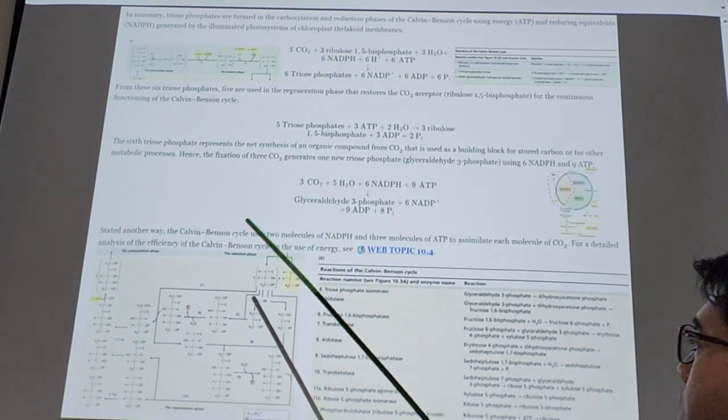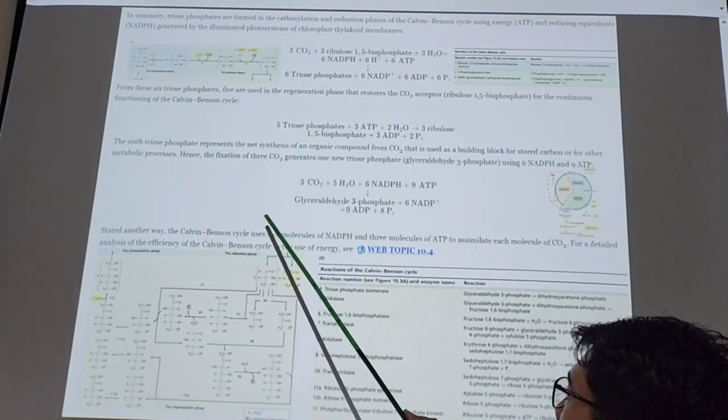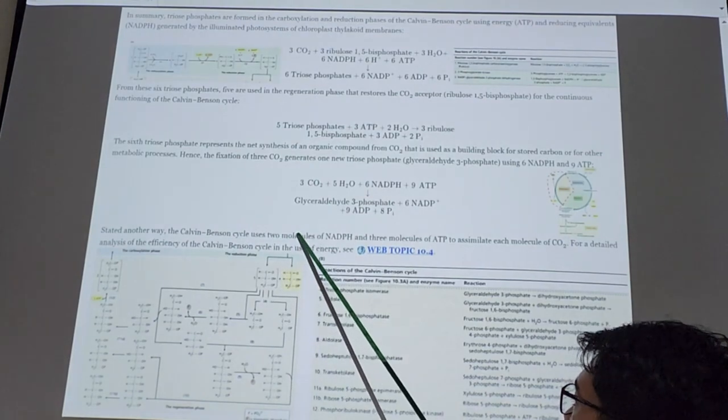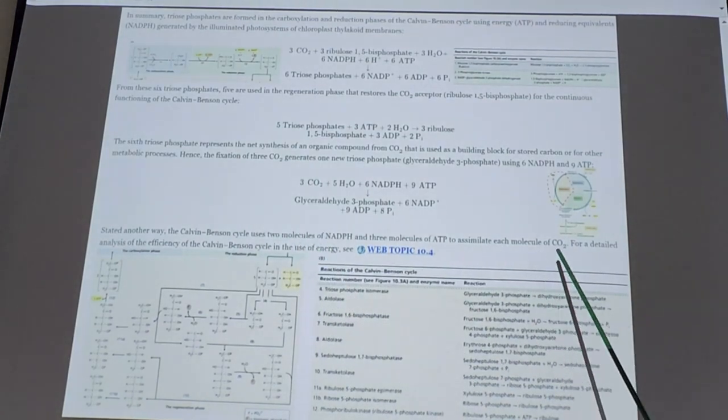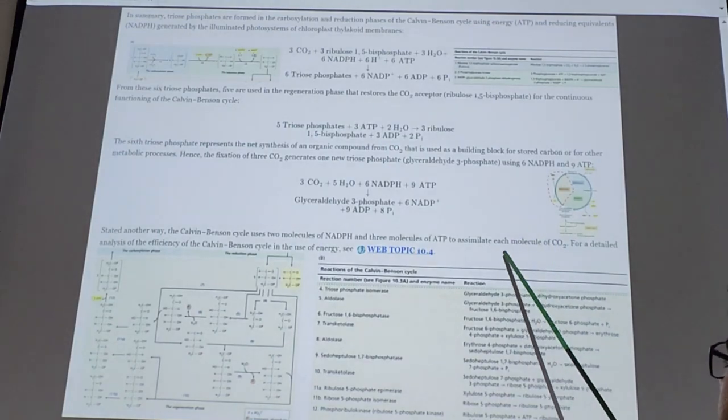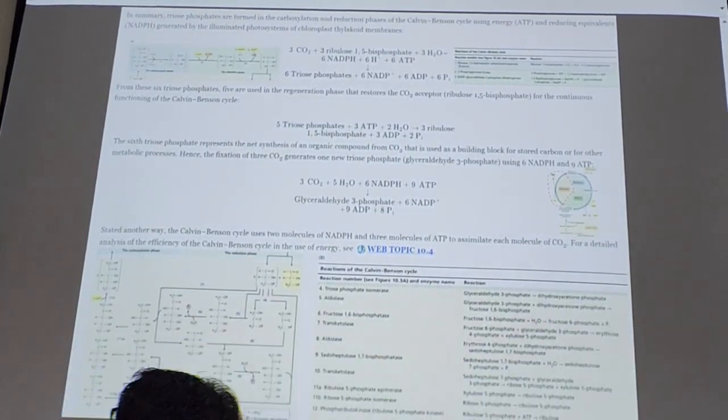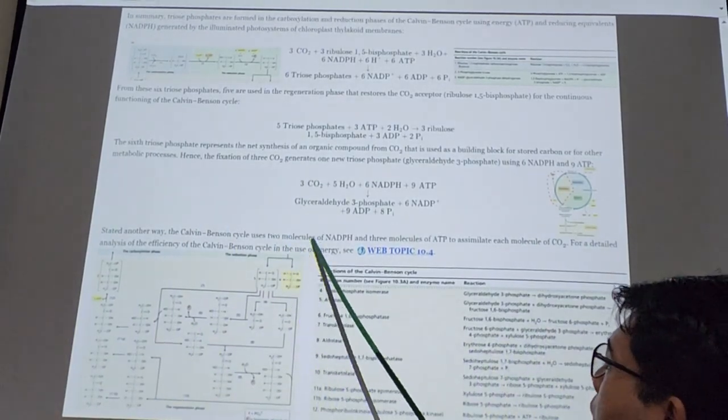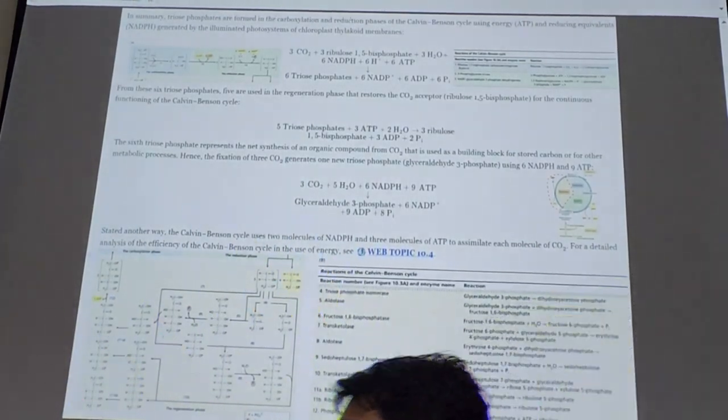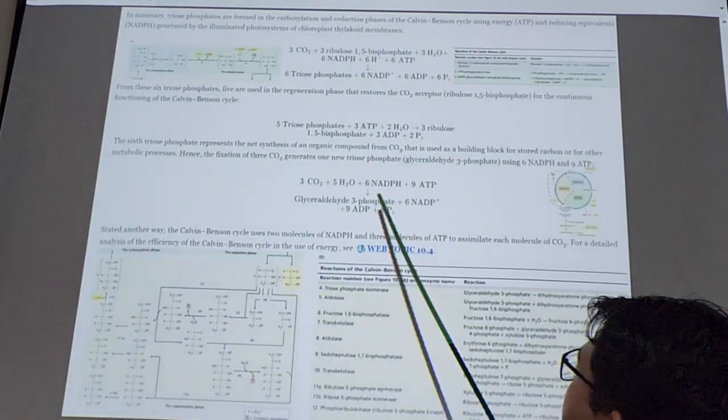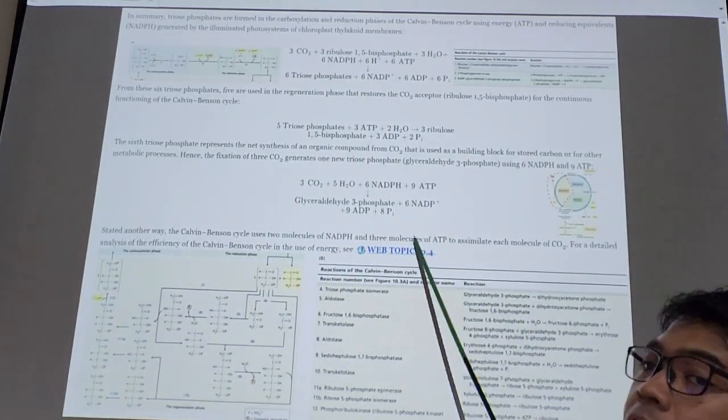This sentence here. So at the end of this cycle, in order to assimilate each molecule of CO2, each molecule of CO2 you will need two molecules of NADPH and three molecules of ATP.